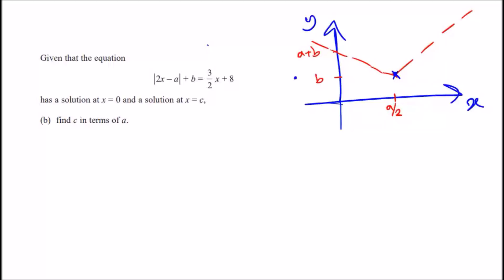This can be a bit confusing if you're not sure how to begin it. The first thing we should observe is that they're intersecting two different equations. Firstly, the one we saw in the previous problem, which is the mod of 2x minus a plus b, and a brand new straight line equation of 3 over 2x plus 8.